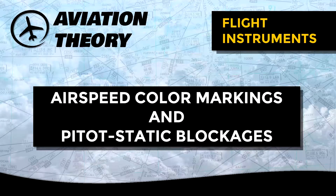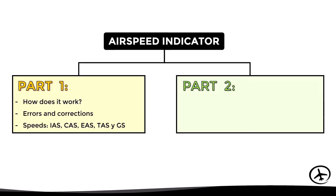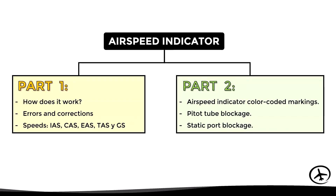Today we will talk about the color-coded markings of the airspeed indicator as well as the pitot-static system blockages that may occur. As mentioned in the previous video, the airspeed indicator topic is divided into two videos. In part one we talked about its principle of operation, the errors and corrections, as well as the different speed terms used in aviation. In this second part we will focus on the color markings and how the instrument reacts in case of a pitot tube or static port blockage.